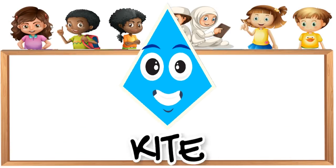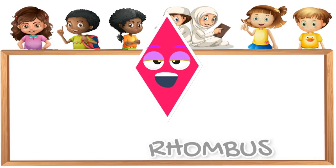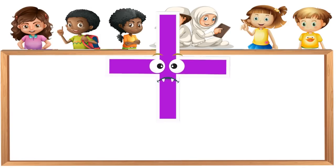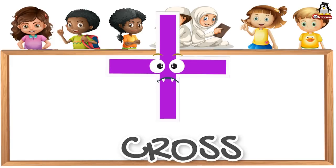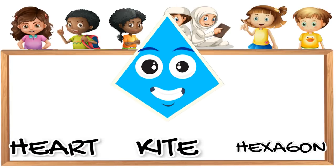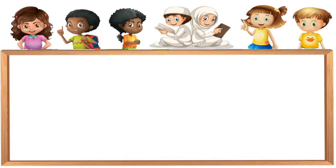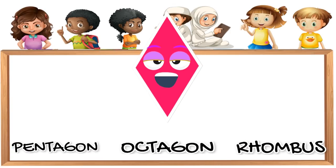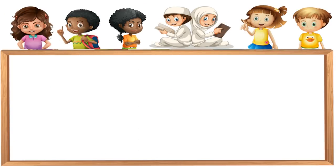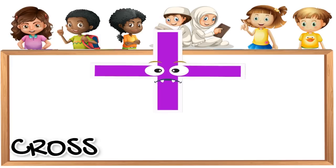Kite. Rhombus. Cross. What shape is it? Kite. Excellent! What shape is it? Rhombus. Great! What shape is it? Cross. Very good!